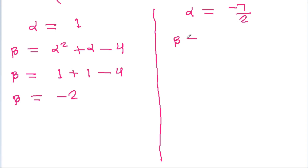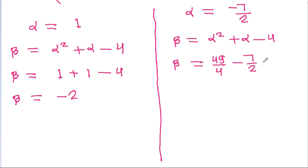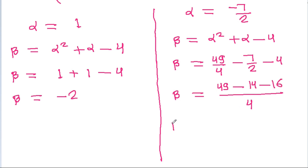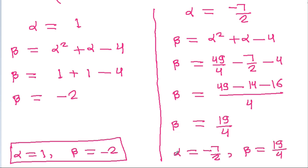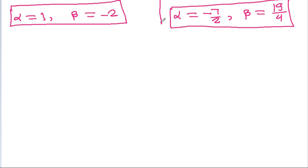For α=-7/2: β=(-7/2)²+(-7/2)-4=49/4-7/2-4=(49-14-16)/4=19/4. So we have two cases: α=1, β=-2 and α=-7/2, β=19/4.